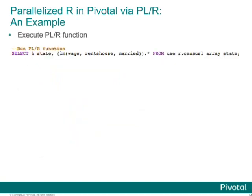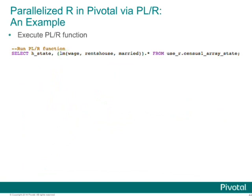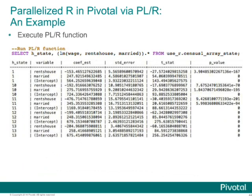Once you've defined the PLR function, you execute it and get back a plain SQL table containing your variable names, coefficient estimates, standard errors, t-stats, and p-values. The PLR framework allows you to do very sophisticated things statistically. For example, you could build a decision tree with bootstrap aggregation: create separate bootstrap samples of the original data stored on every segment of Greenplum, run rpart on every segment in parallel, and each segment votes on a prediction. Taking the majority vote gives you a parallel bagged decision tree implemented on Pivotal.